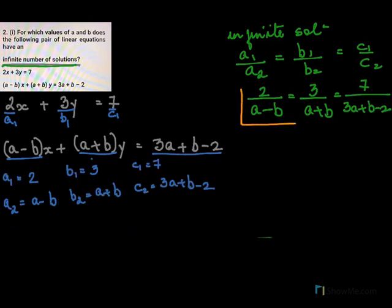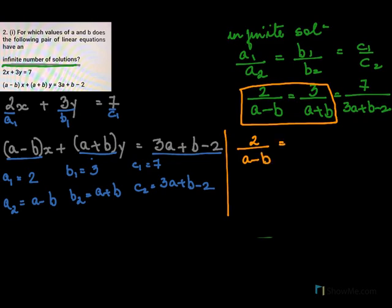Now to solve this, I will just take these two first. Means what? I will do 2 over A minus B equals 3 over A plus B. Let me solve this. So I cross multiply.